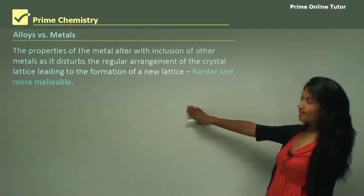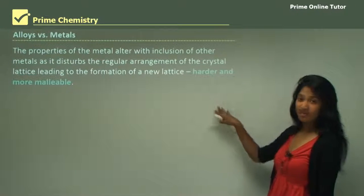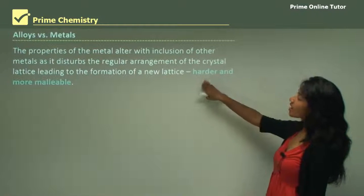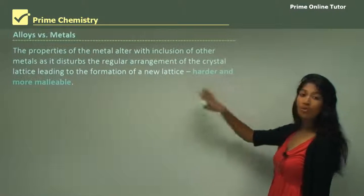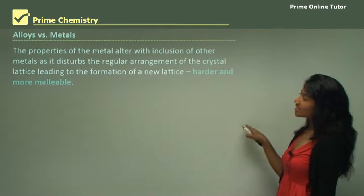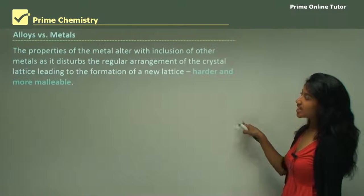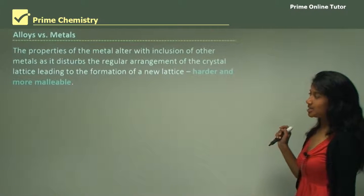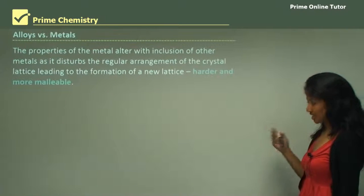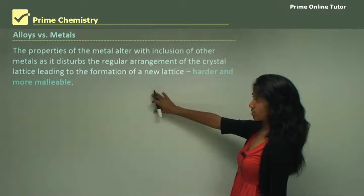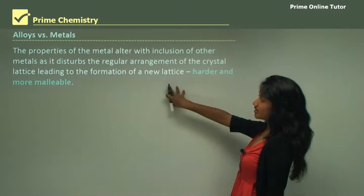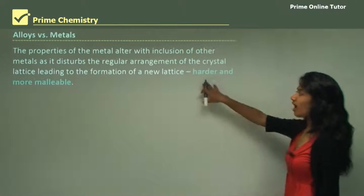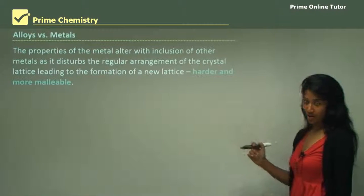We will be comparing alloys and metals in terms of physical properties. Alloys are much harder and more malleable than metals. This is because it disturbs the regular arrangement of the crystal lattice, leading to the formation of a new lattice, which provides a much harder and more malleable structure.